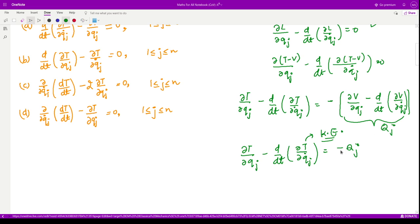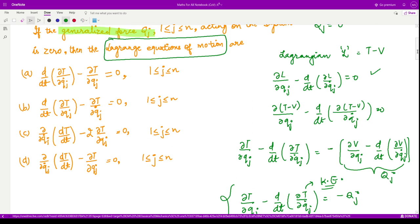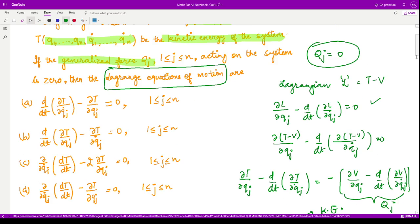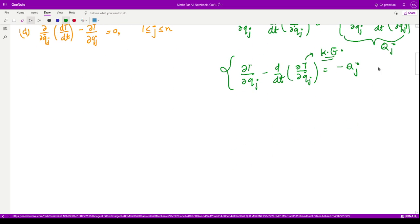This is true when our system is conservative as well as non-conservative. But in the current question, Qj is given to be zero. Therefore, this quantity equals zero, so we have this equation with this term equal to zero.